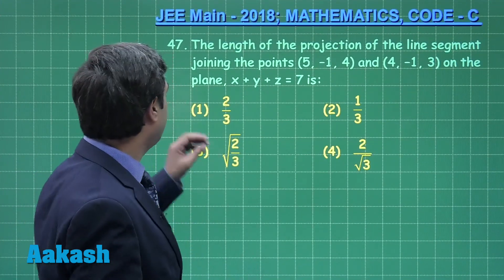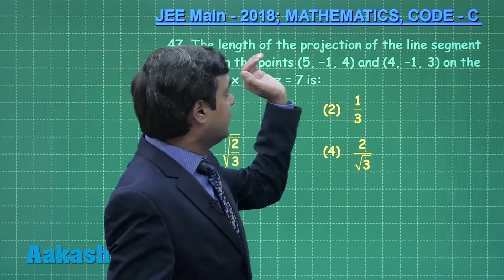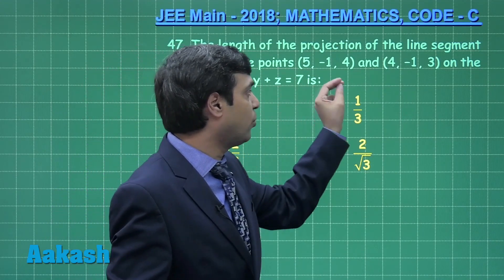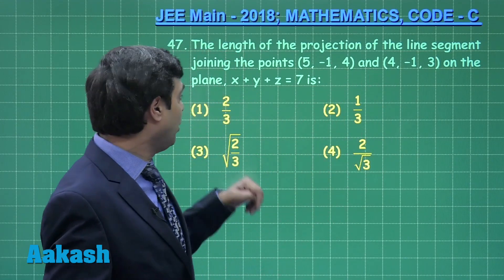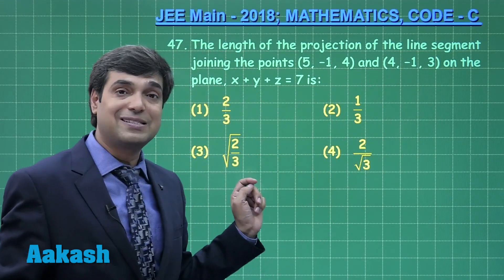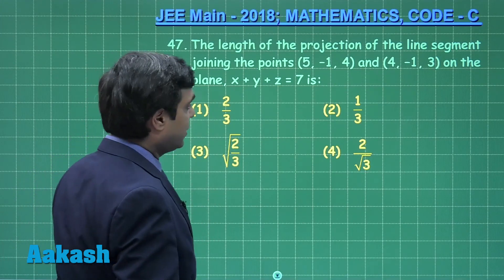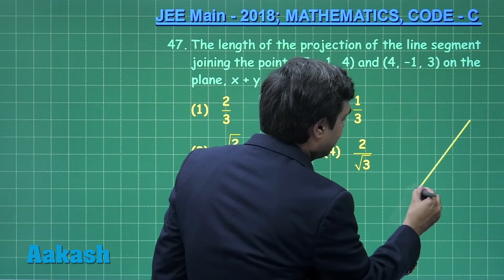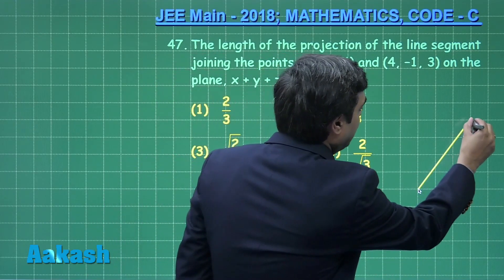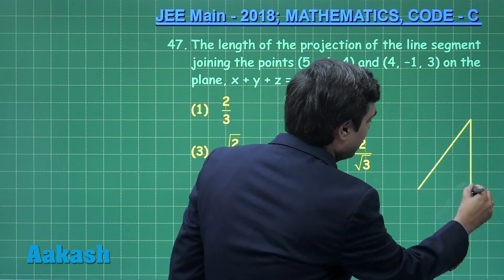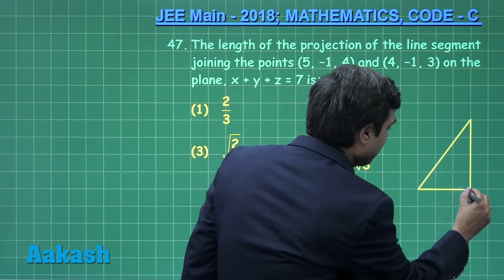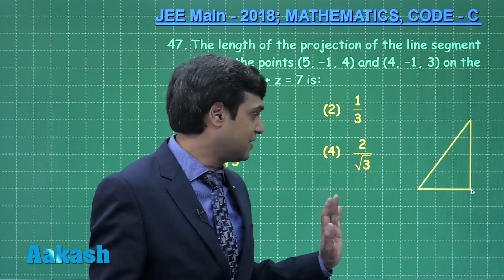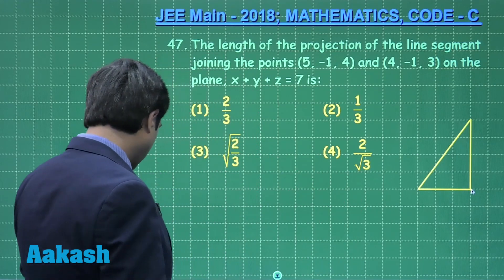Let us consider question number 47: find the length of projection of the line segment joining (5, −1, 4) and (4, −1, 3) on the plane x + y + z = 7. The normal vector is along a certain line, and we need the length which is the projection of AB on the plane.